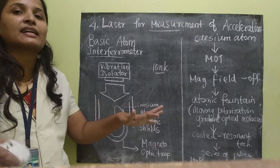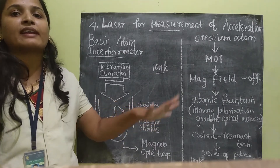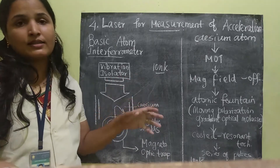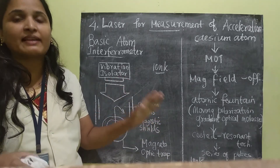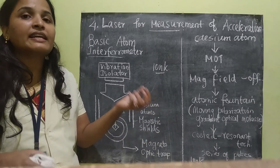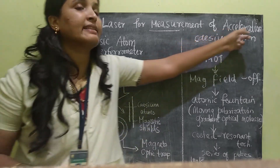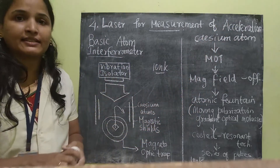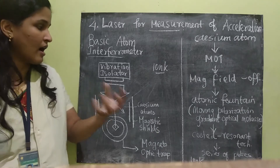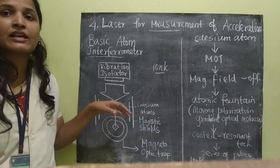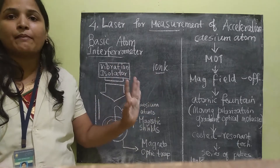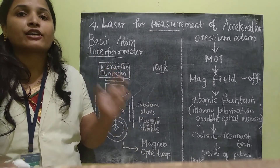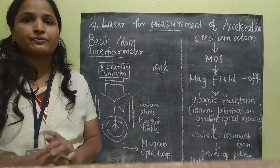Now the cesium atoms are free from gravity. Once the cesium atoms are free from gravity, then only can they be used for finding the acceleration. The acceleration vectors or gravity vectors are allowed to interact with these freely moving conditioned cesium atoms, so the acceleration can be accurately measured.